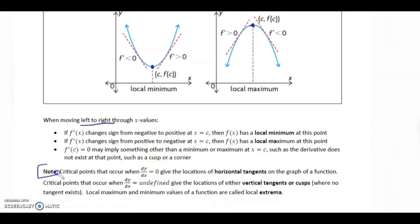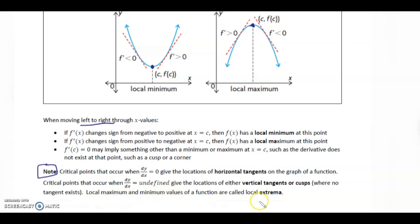Critical points that occur when the derivative equals 0 — dy/dx — give the locations of horizontal tangents on the graph of the function. Critical points that occur when the derivative dy/dx equals undefined give the locations of either vertical tangents or cusps, where no tangent exists. Local max and min values of a function are called local extrema.